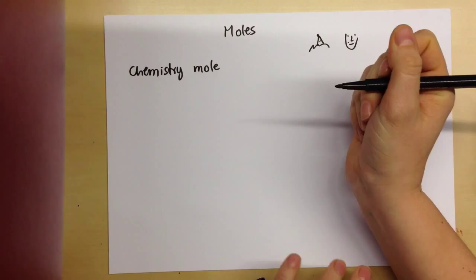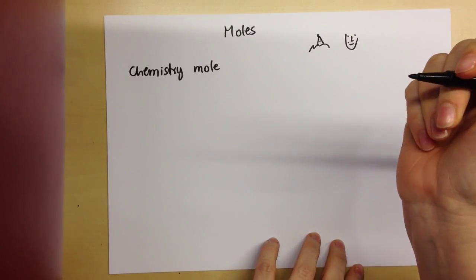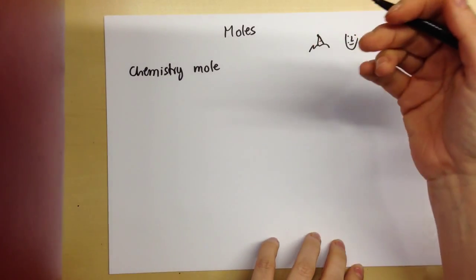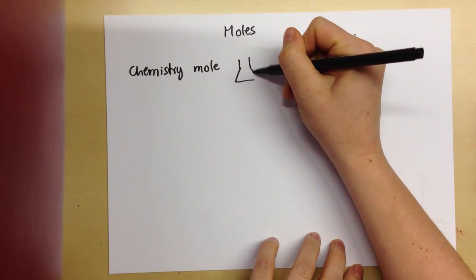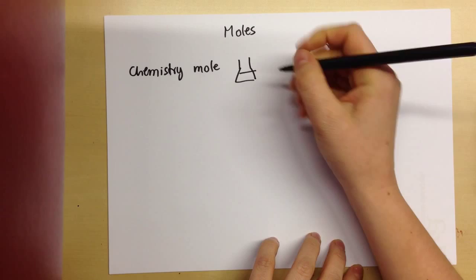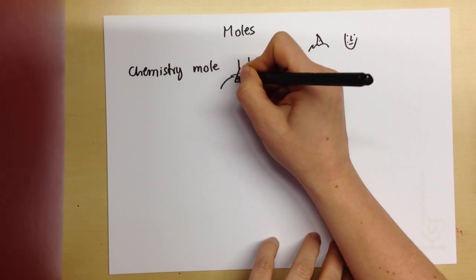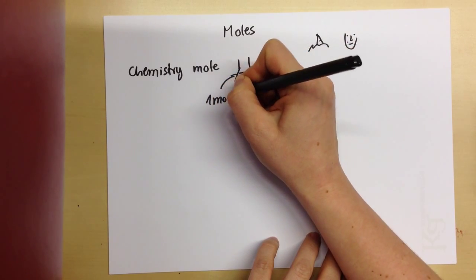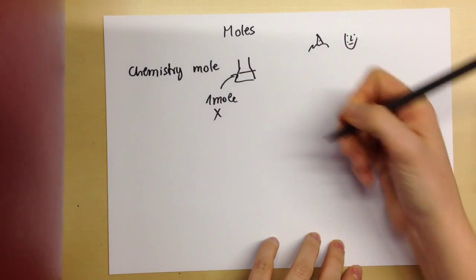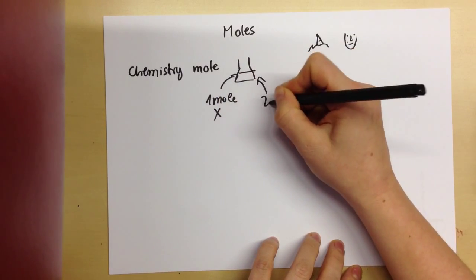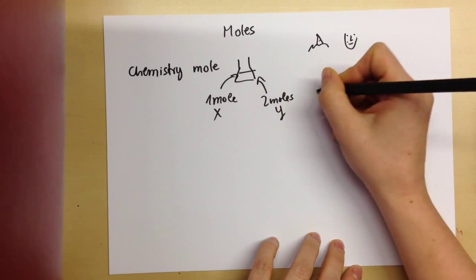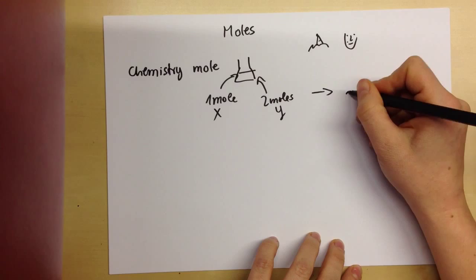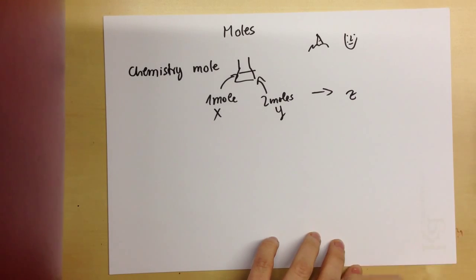So a mole is kind of a unit that chemists use to measure things or to talk about certain quantities. So like if you were going to do a reaction, you would put in one mole of substance X and maybe two moles of substance Y and you would get something.